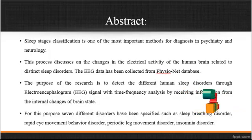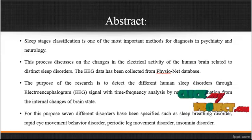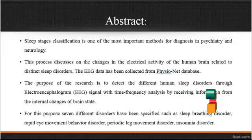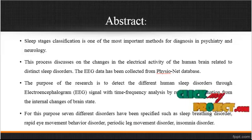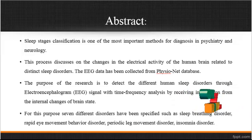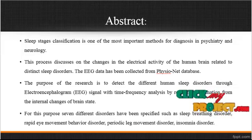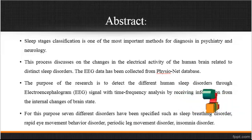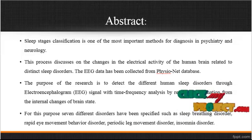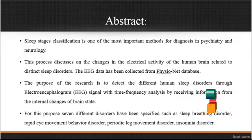Now we are going to discuss the abstract for the process. Sleep stage classification is one of the most important methods for diagnosis in psychiatry and neurology. This process is based on the changes in the electrical activities of the human brain related to distinct sleep disorders. The EEG data has been collected from the Cycnet database. The purpose of this research is to detect different human sleep disorders through EEG signals with time frequency analysis by receiving information from internal changes of brain state.